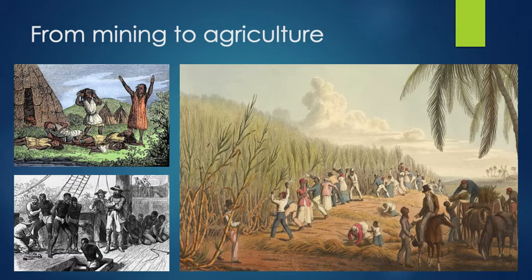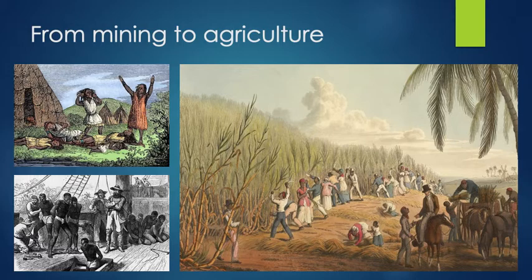Later on, other settlers — the French, the English, the Dutch — began going to the Caribbean with the intention of setting up plantations. The Caribbean shifted from mining to agriculture. They found these lands very suitable for sugar, which was very profitable in Europe, and this land was much larger than the islands in the Mediterranean and Atlantic where the Spaniards had been cultivating sugar. Since there were not many indigenous people left, they began to import slaves, which set off the transatlantic slave trade.